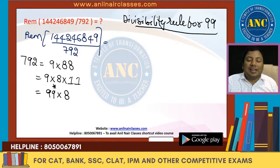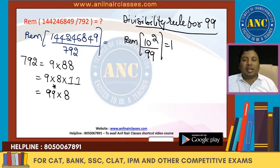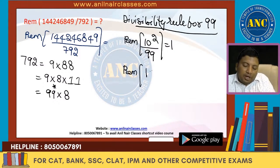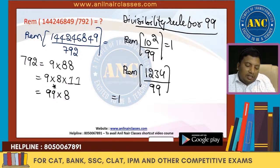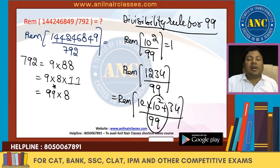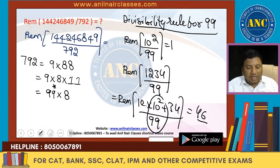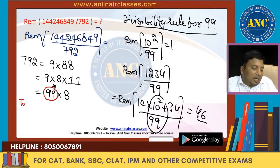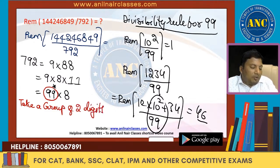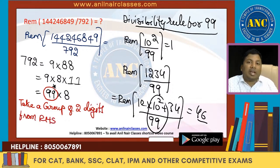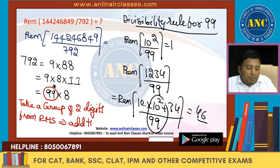Divisibility rule for 99: 10 squared divided by 99 — that is, 100 divided by 99 — gives remainder 1. So for a four-digit number like 1234 divided by 99, I can write it as 12 × 10² + 34 divided by 99, which is 34 + 12 = 46. So the divisibility rule of 99 is: take a group of two digits from the right-hand side and add them.